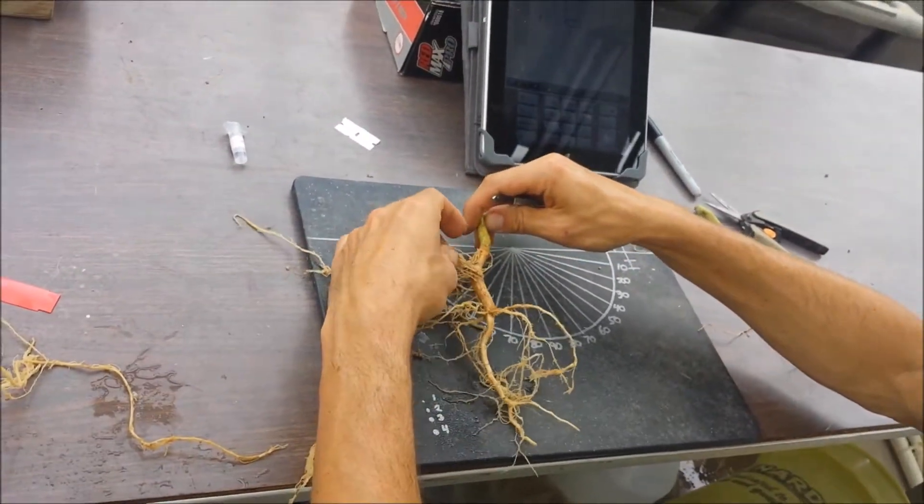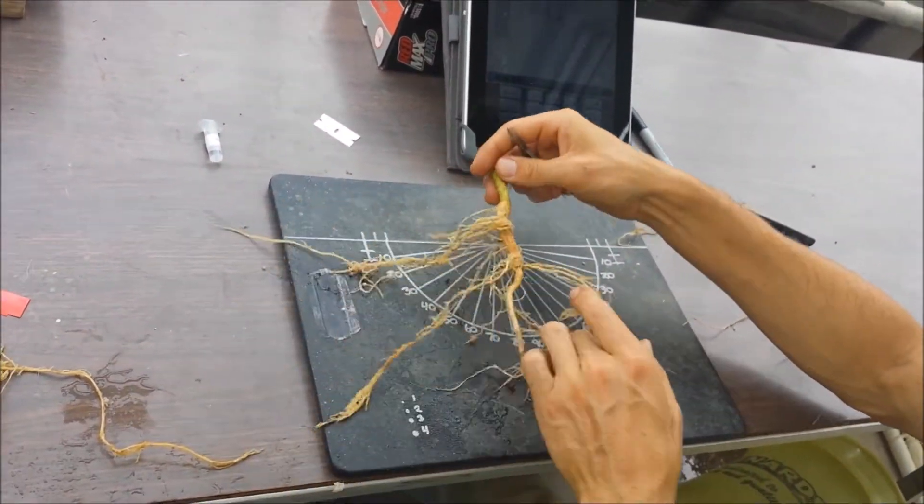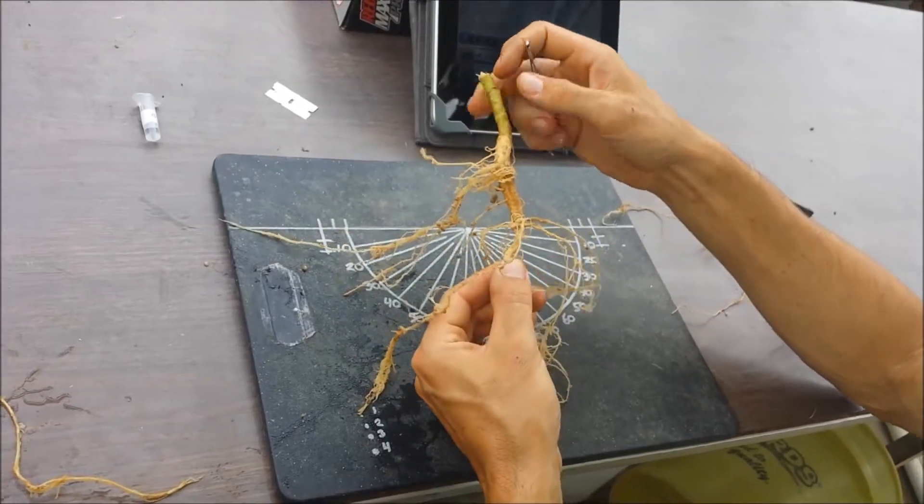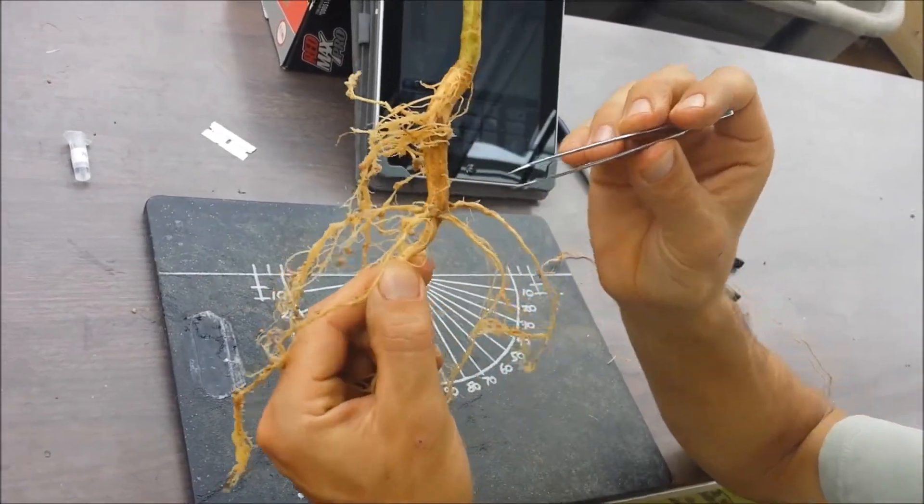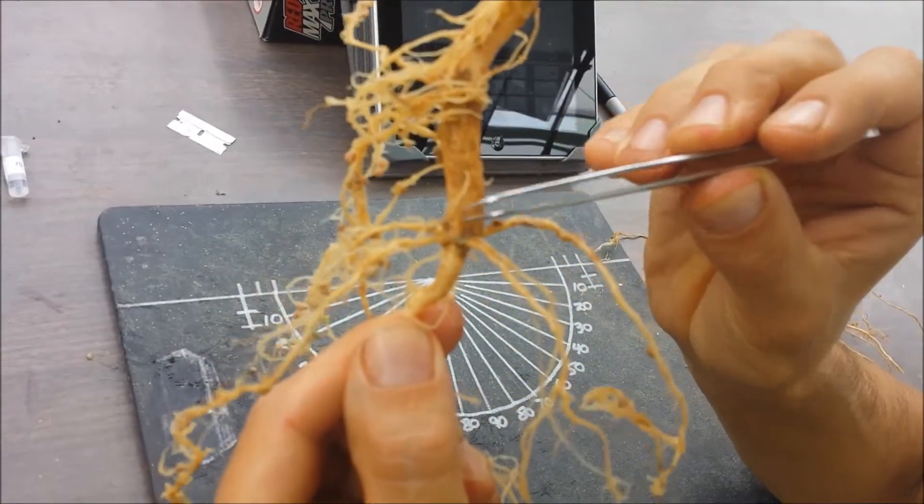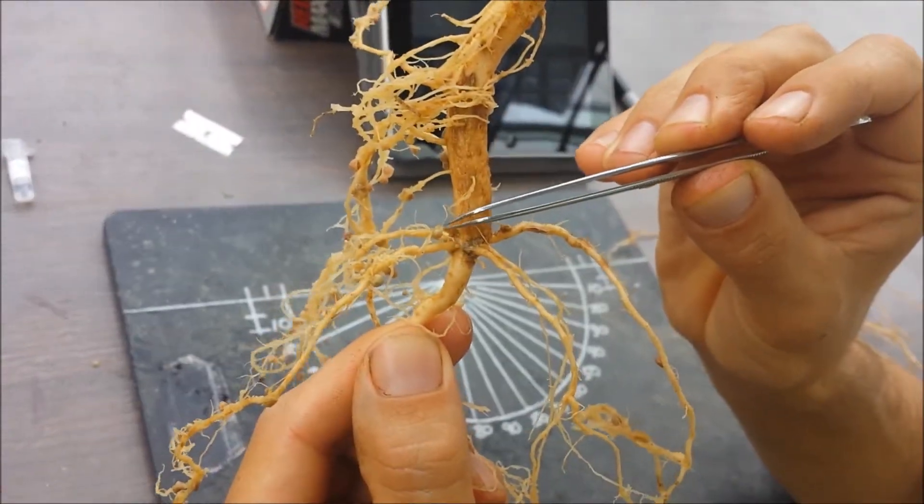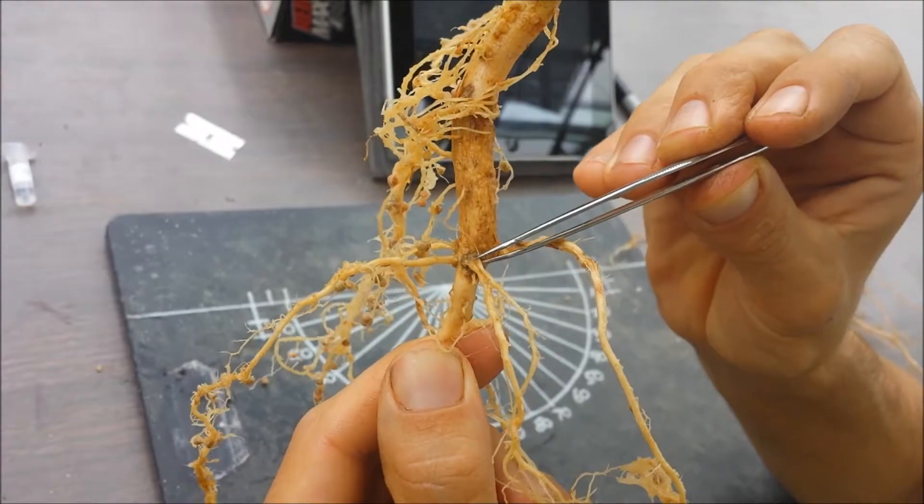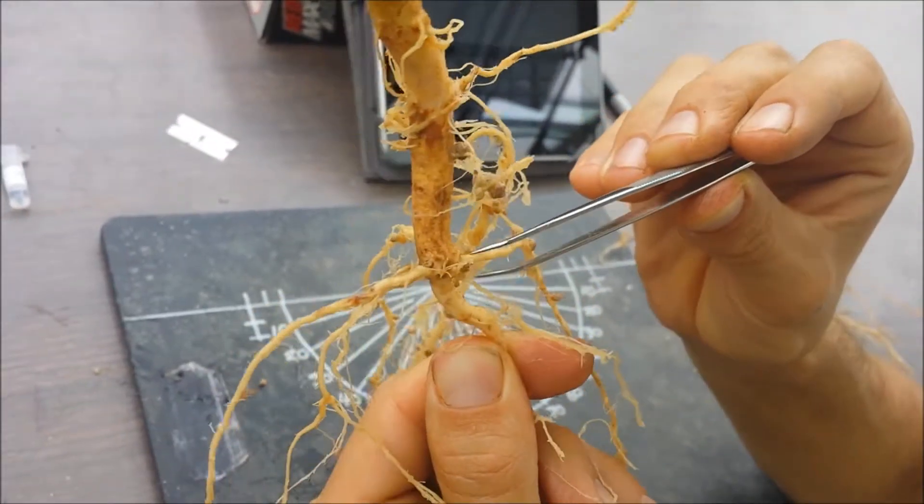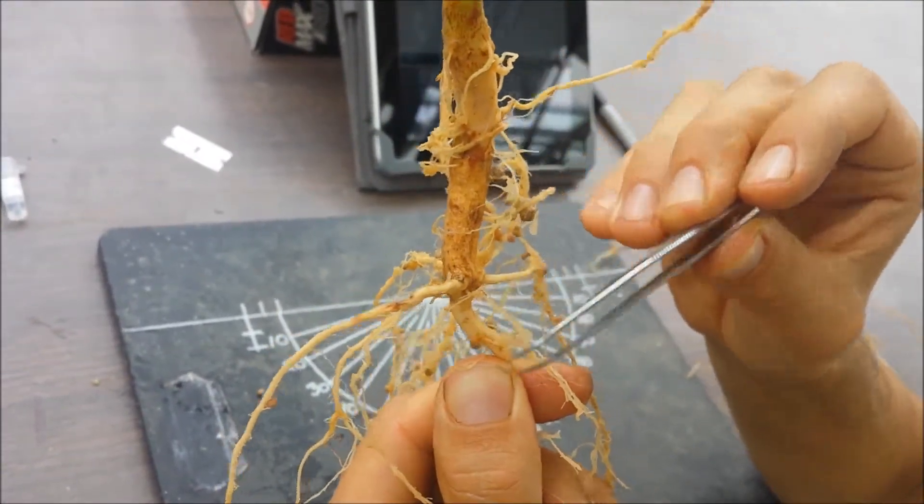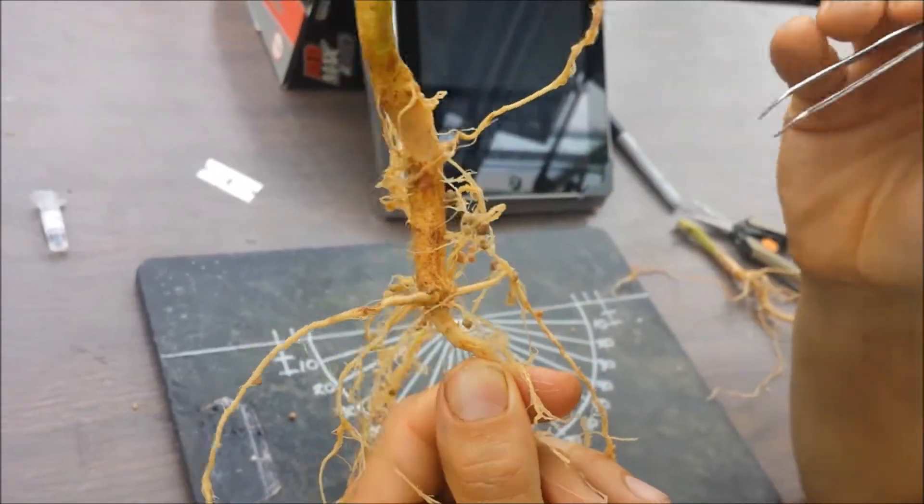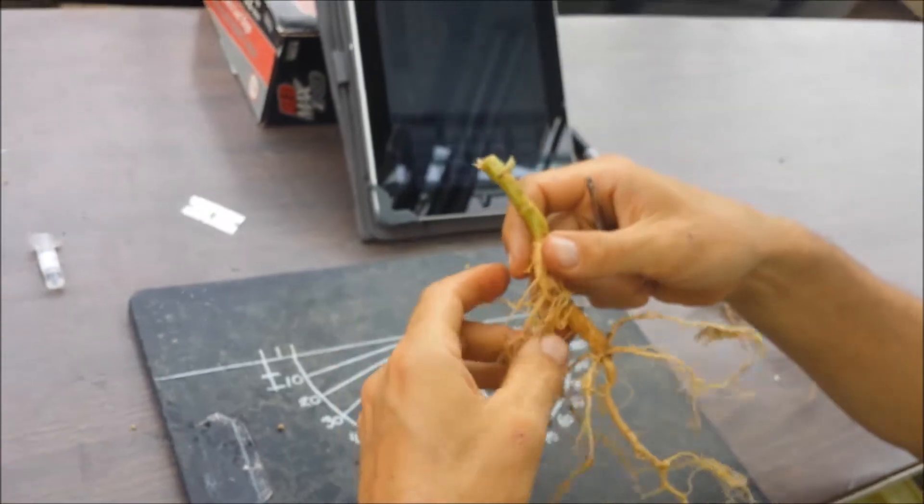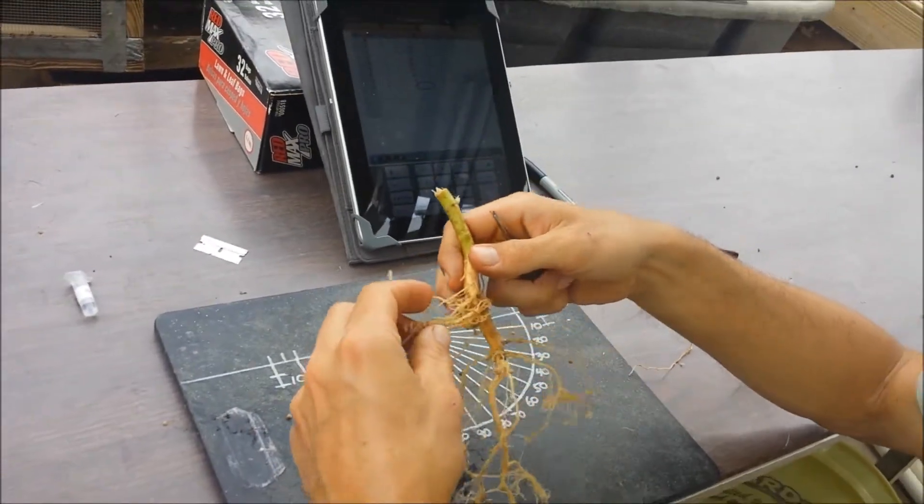I generally start with the observations of the basal roots. So I first count the number of whorls, which in this case are two. You can see that. This is one phyle, and this is the first whorl, and that's the second whorl. And in this location, there's only one root occupying that phyle. So that would be two whorls and seven basal roots.